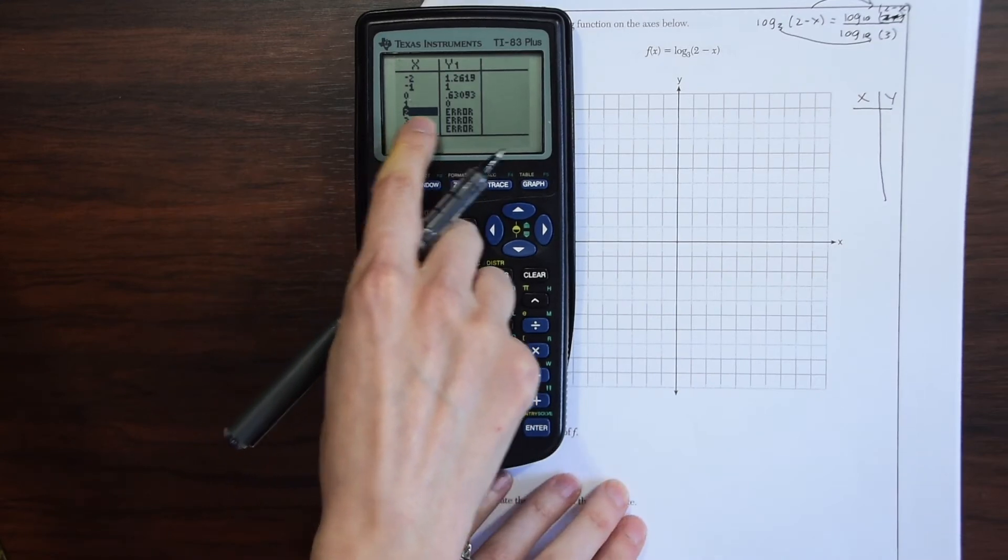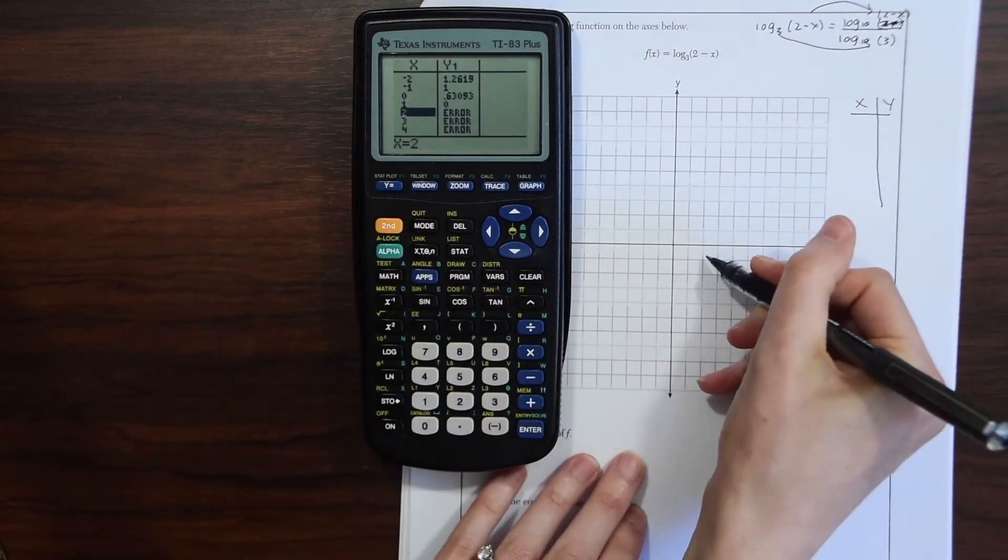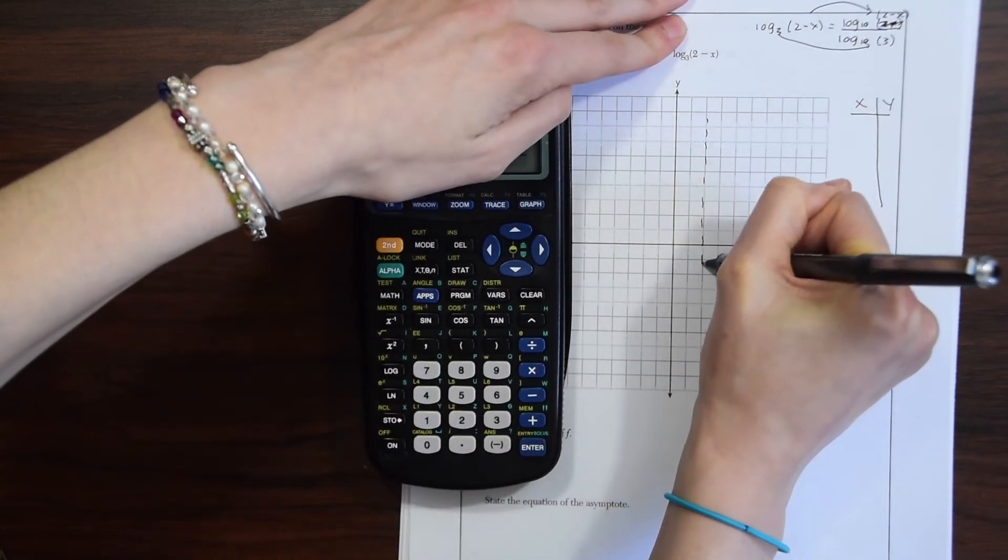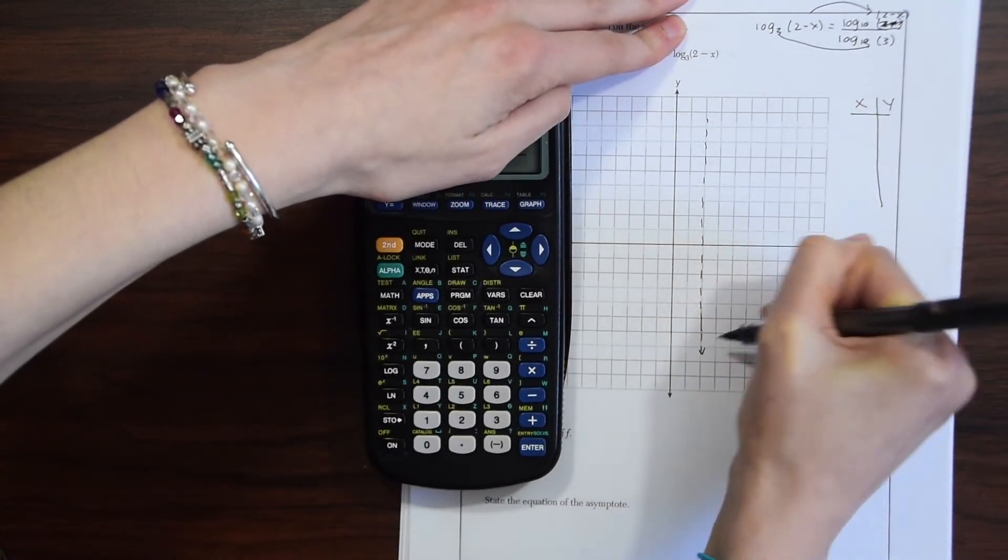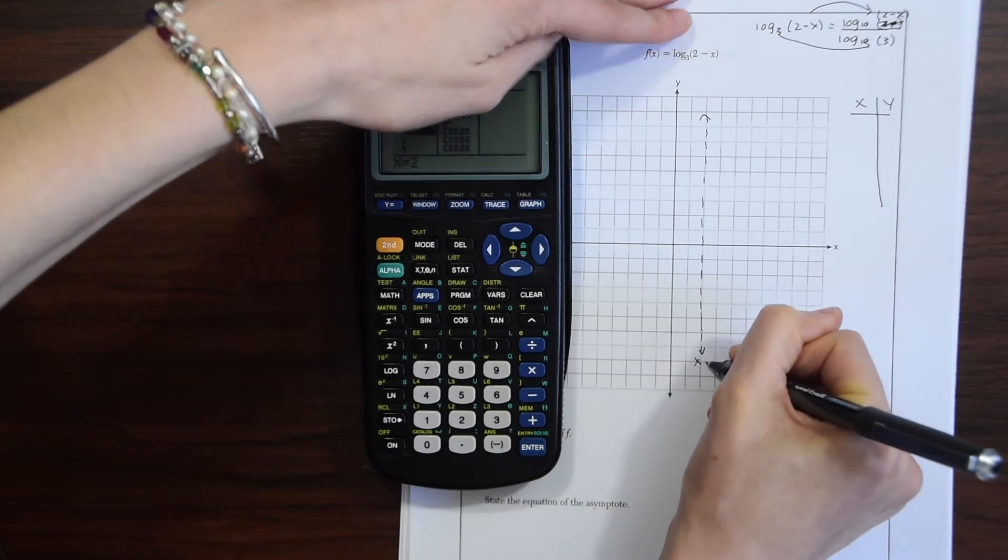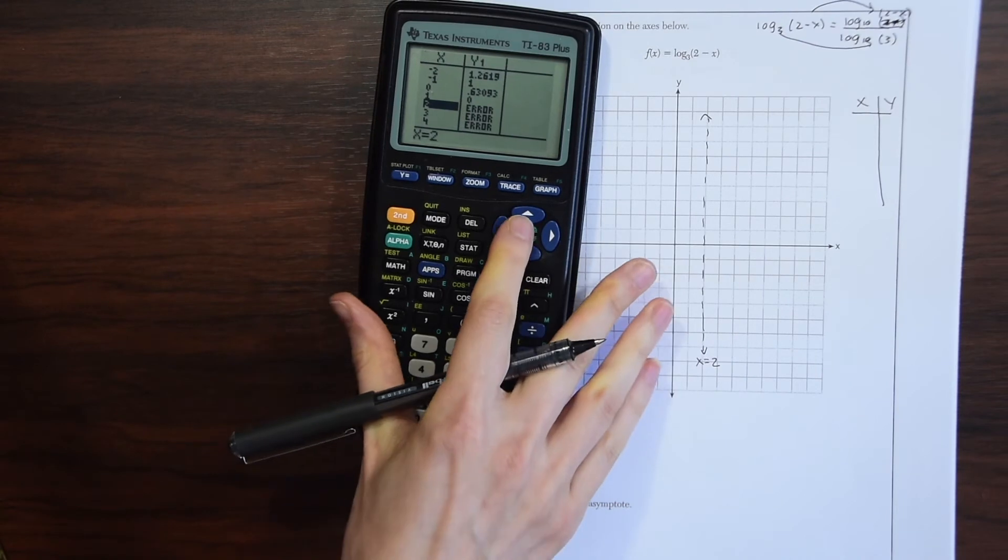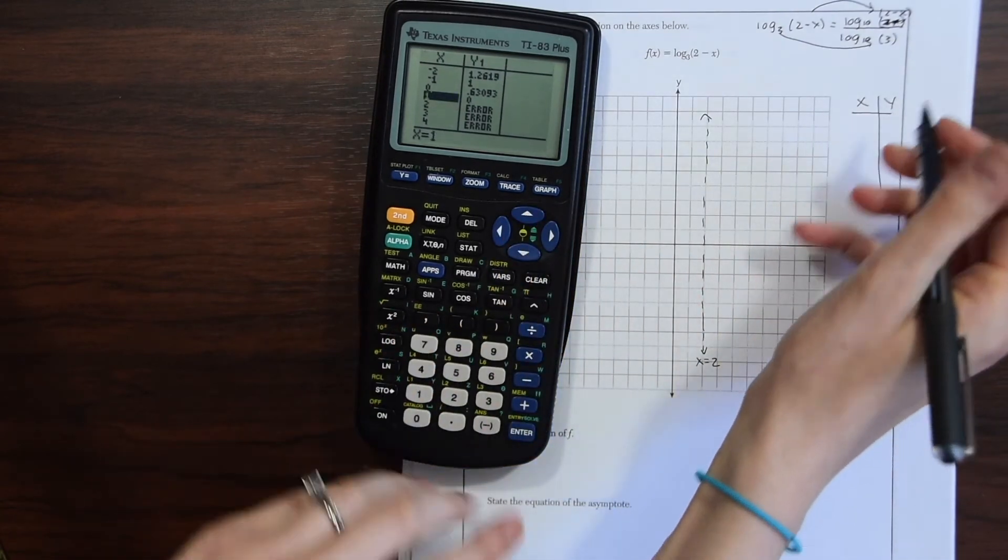Notice there's an asymptote at x = 2, so go to 2 and we're going to make this dotted line so we know that nothing can go past or to this line, but we could get very, very close to it. Notice that we have some values here.